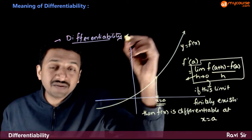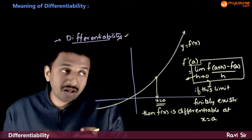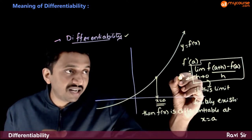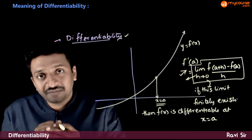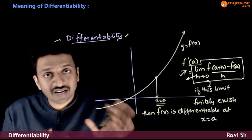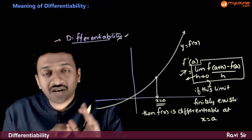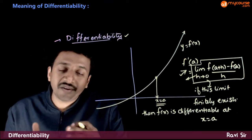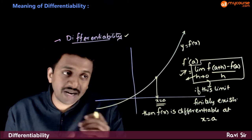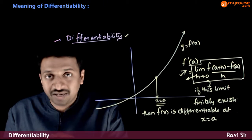Differentiability is a very straightforward concept. It involves calculation of this limit. If this limit exists, then the function is differentiable. If it does not exist, it is not differentiable at that point. As simple as that.